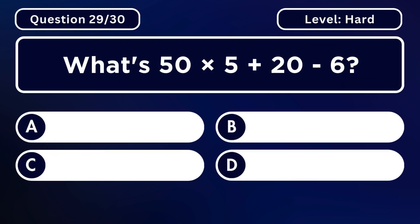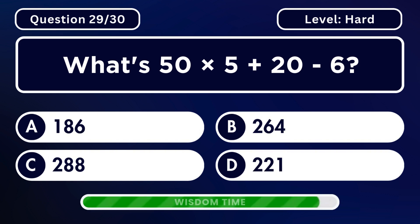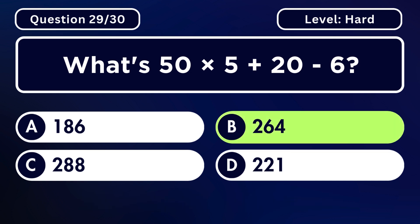What's 150 multiplied by 5 plus 20 minus 6? Answer D. 20.